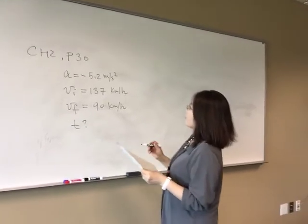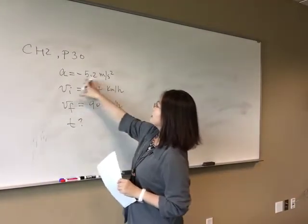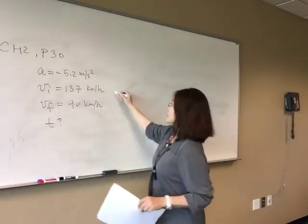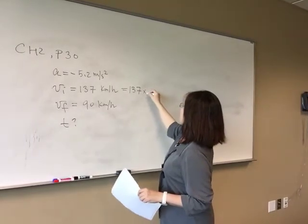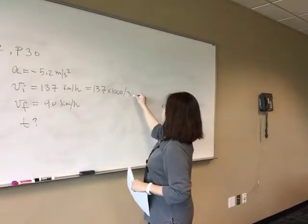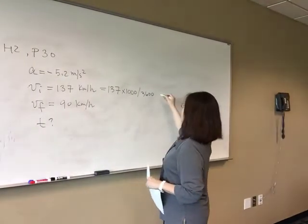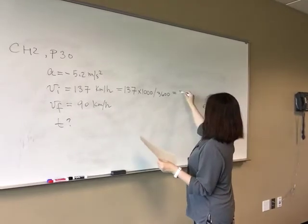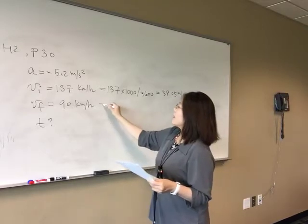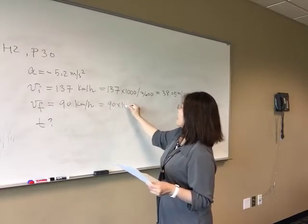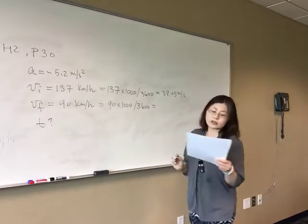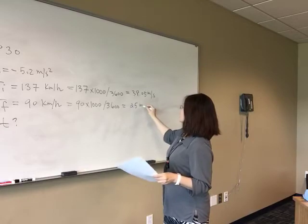Because the acceleration is given in SI units, we need to convert the velocities into SI units. So you have 137 times 1,000 divided by one hour, which is 3,600 seconds. After the conversion, your initial velocity is 38.05 m per second. And similarly, 90 times 1,000 divided by 3,600 seconds gives you 25 m per second.